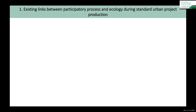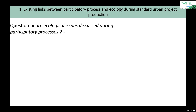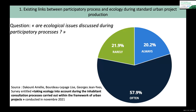The French town planning code provides at a national scale for public participation and consultation that applies to every urban project. Planning documents established at a local scale are trying more and more to add green goals or prohibitions to protect natural green spaces on the model of green districts. To obtain a better vision of ecological issues integration in participatory processes during standard urban projects, we conducted a survey on expert opinion from October 29th to November 11th 2021, gathering 116 expert answers.